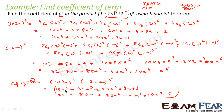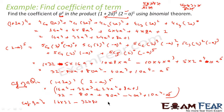So we only multiply the pairs that give a⁴: 16a⁴ × 32, then 32a³ × (−80a), then 24a² × 80a², then 8a × (−40a³), and finally 1 × 10a⁴. Multiplying any other combination will not yield a⁴, so we can ignore them.